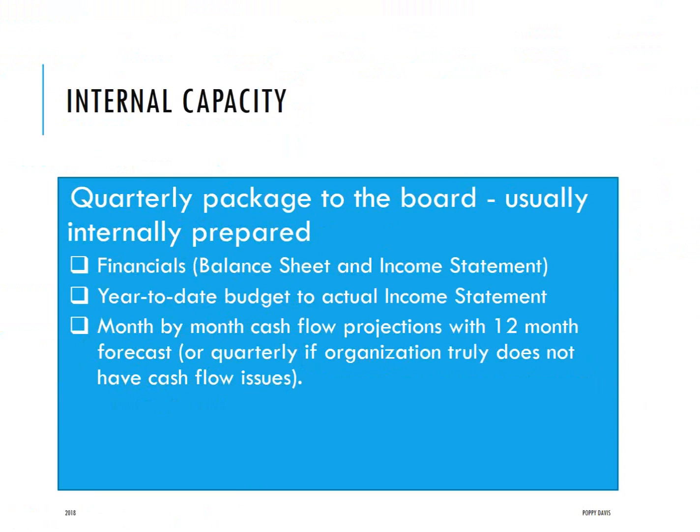Month-by-month cash flow projections should probably go out a good 12 months. If the organization truly doesn't have cash flow issues, a shorter period might be okay, but there wouldn't necessarily be any reason to shorten it.